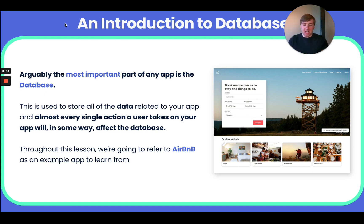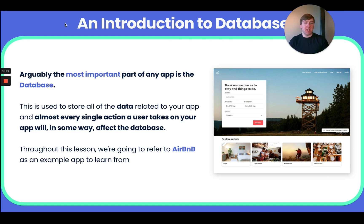Let's talk about what a database actually is. It is a place within your app — supported by every no-code tool out there — that is used to store all of the data related to your app, and almost every single action that a user takes will in some way affect the database. To explain this, throughout this pillar and the entire fundamentals series, I'm going to use the example of a company called Airbnb.